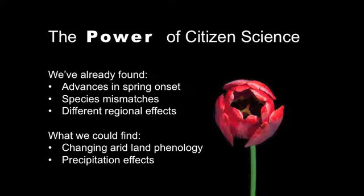Scientists have already found advances in the start of spring, as well as species mismatches, which is where changing phenologies in two species make them newly incompatible. For example, if a flower starts blooming earlier but a pollinator starts pollinating later in the season, and they no longer interact for as long, this can have repercussions within the ecosystem. We've already found that the effects of a changing climate impact different regions of the U.S. differently. What happens to trees in the northeast is markedly different than what may happen to trees in the Sonoran Desert. Yet arid land phenology is surprisingly understudied — we really don't have a good idea of how changing precipitation and temperature patterns will affect the southwest, which is why we need more phenology observations and research.